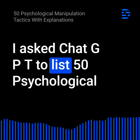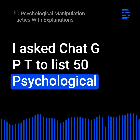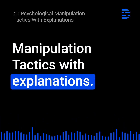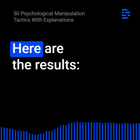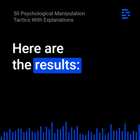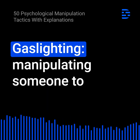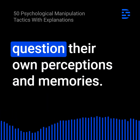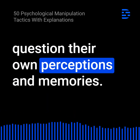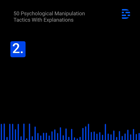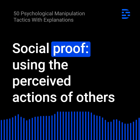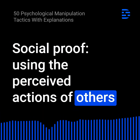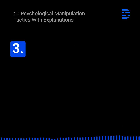I asked ChatGPT to list 50 psychological manipulation tactics with explanations. Here are the results. 1. Gaslighting: Manipulating someone to question their own perceptions and memories. 2. Social proof: Using the perceived actions of others to influence someone's behavior.